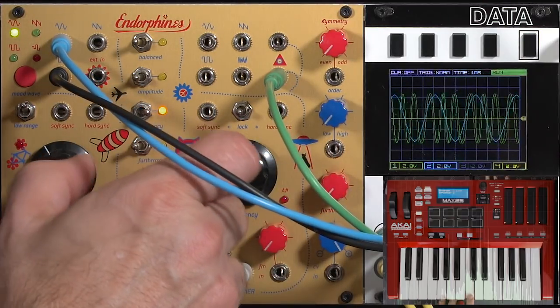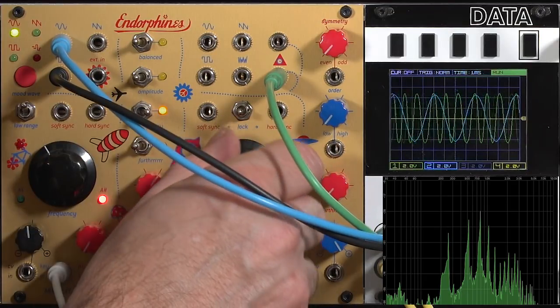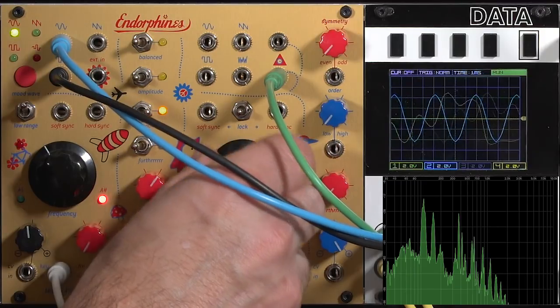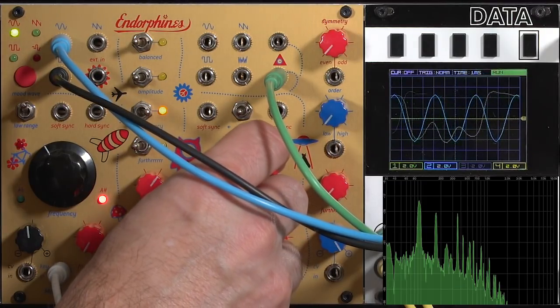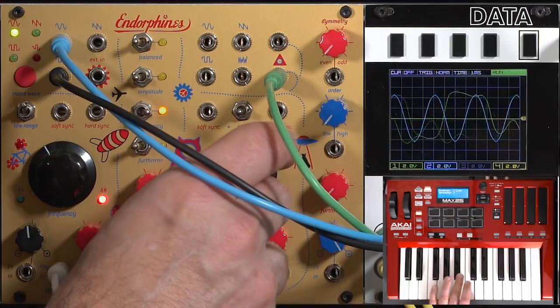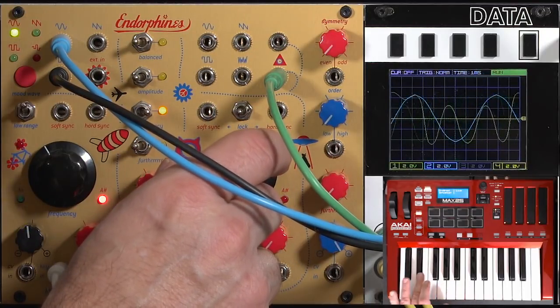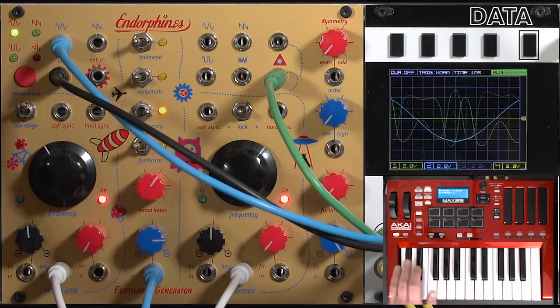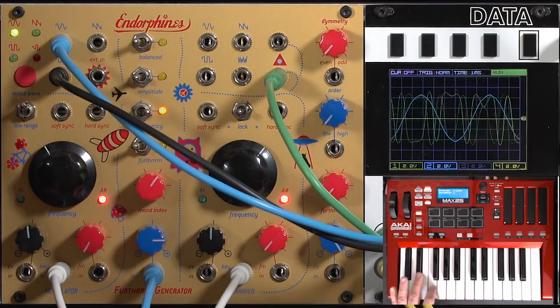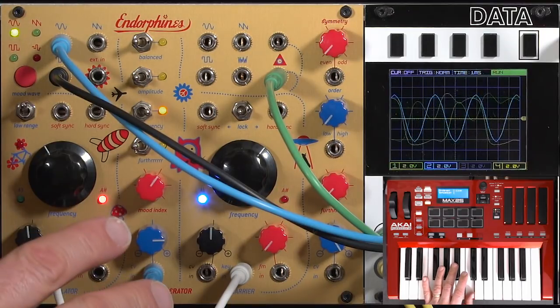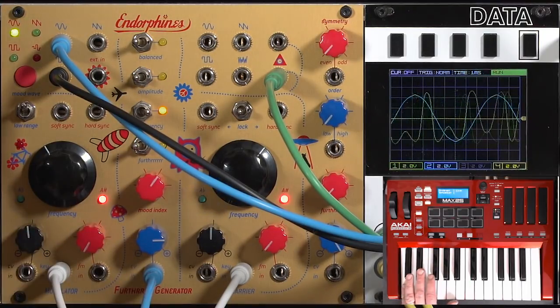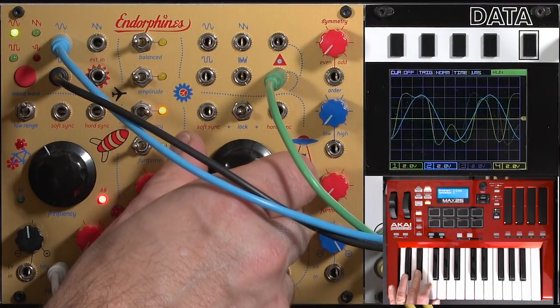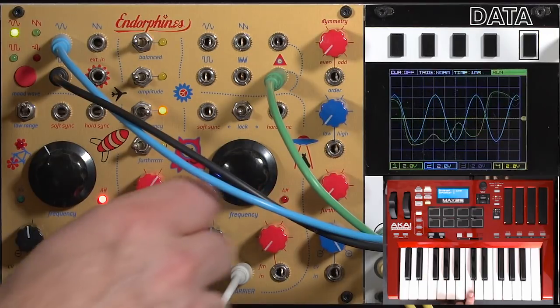Let's go ahead and turn the further generator's carrier down and play with higher modulation frequency in relation to the carrier. Oh, now that's a nice sound as well. You hear a little bit of aliasing at the very top, the digital artifact. Let's go ahead and go even lower. Nice bass.